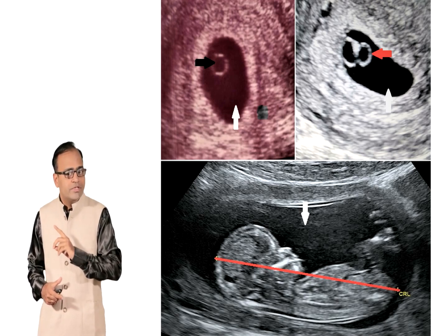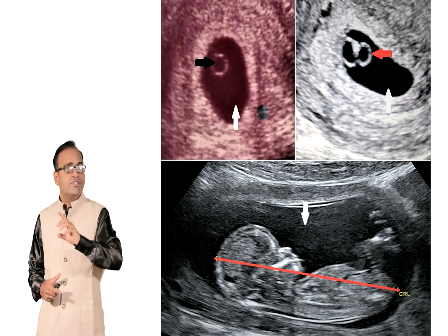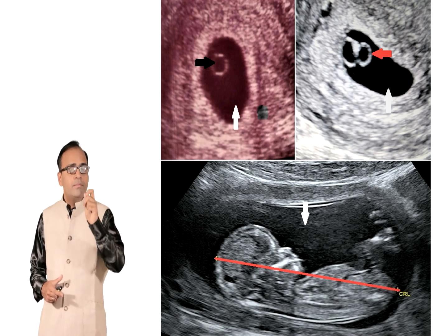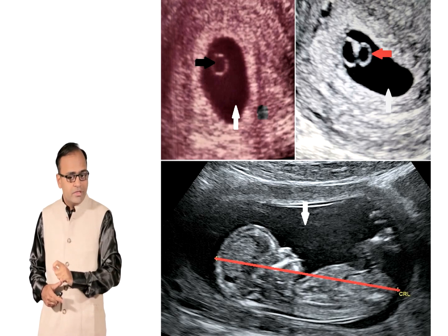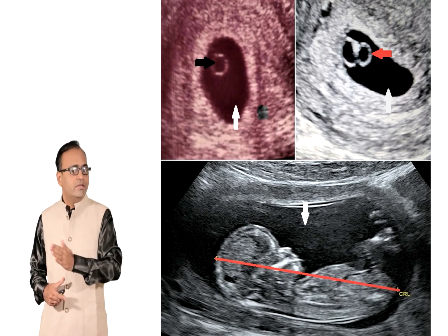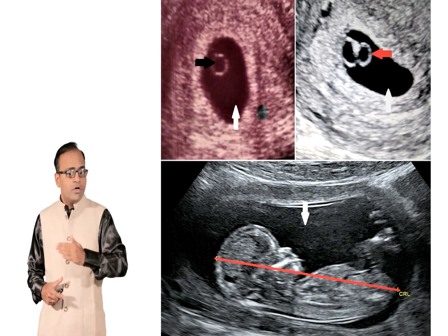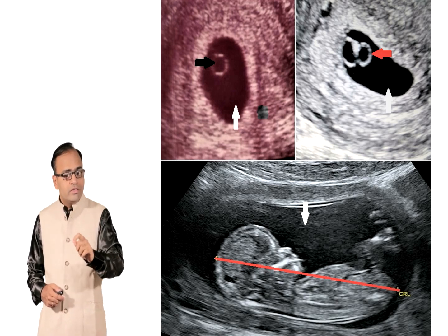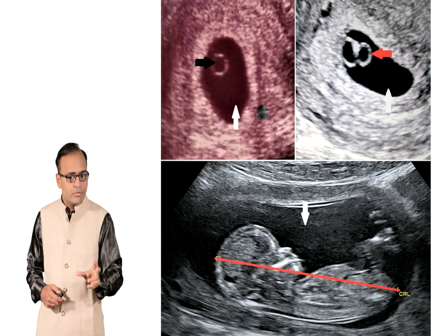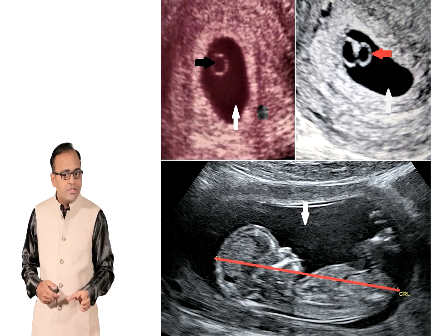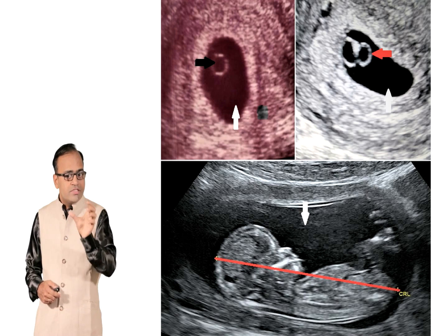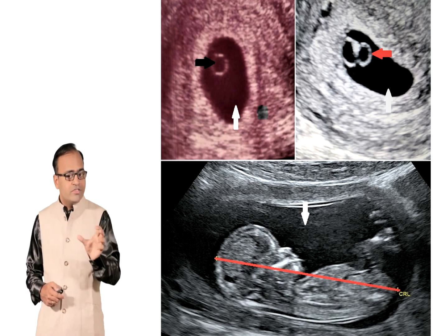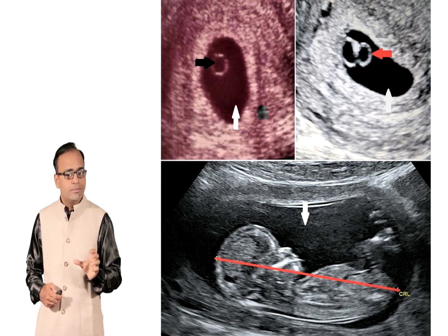Look besides it — there is another image where you can see two ring-like structures inside that particular gestational sac. This is what is called the double bleb sign of early pregnancy. A question was recently asked: the double bleb sign in early pregnancy is formed by what structures? The answer is one of them is the yolk sac, the other one is the amnion. Below it, you can see a fetal pole — the fetus seen inside the gestational sac — and the crown rump length has been measured; this is how the CRL or crown rump length is measured.